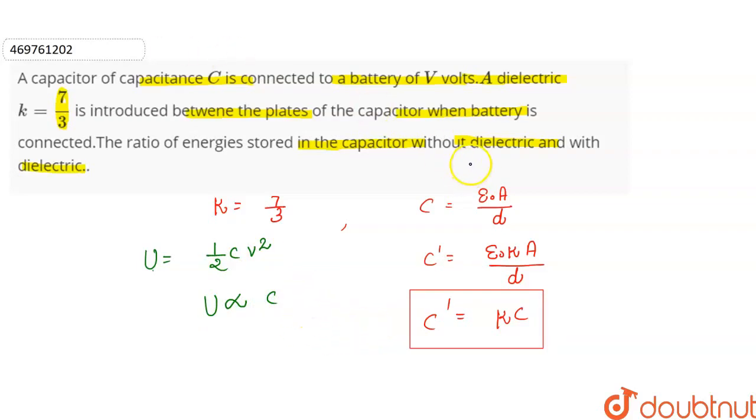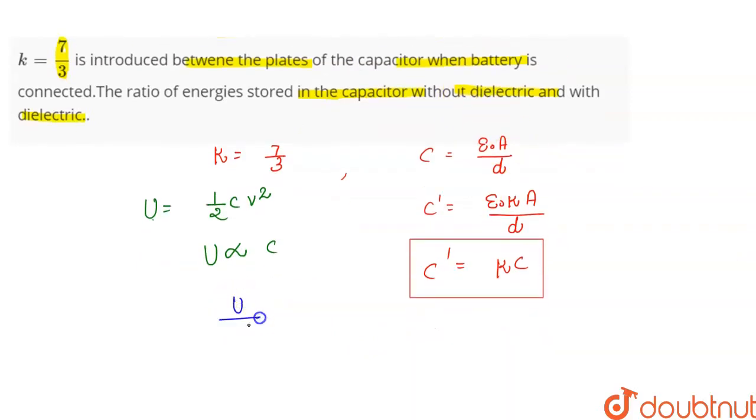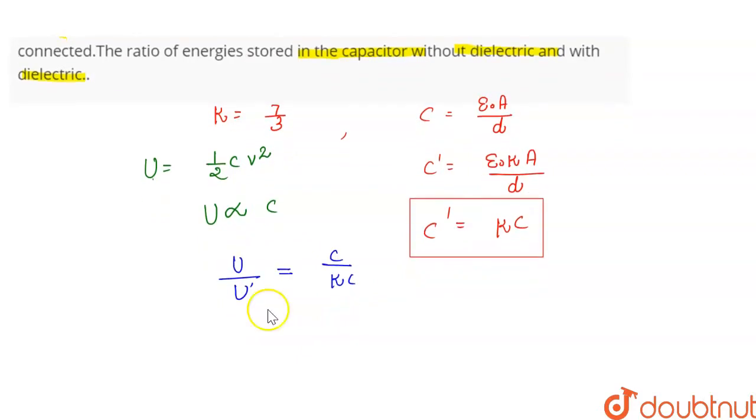Without the dielectric and with the dielectric, initially U upon U dash. Since U is directly proportional to C, we get U upon U dash is equal to C upon kC. C cancels out.